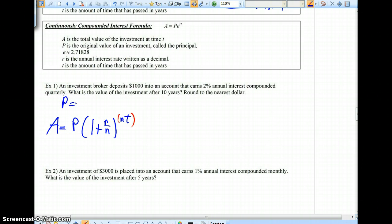An investment broker deposits $1,000 into an account that earns 2% annual interest compounded quarterly. The amount of money that we're starting with or beginning with is $1,000. 2%, well, if you have 2%, you can divide 2 by 100 and very quickly get .02 or take your decimal and move that two places to the left.